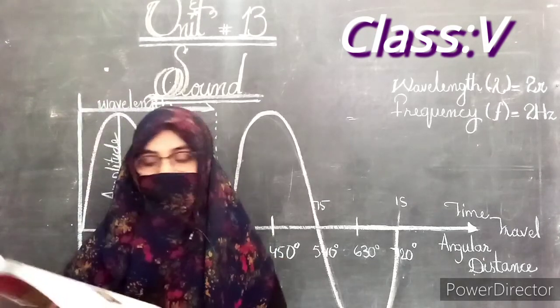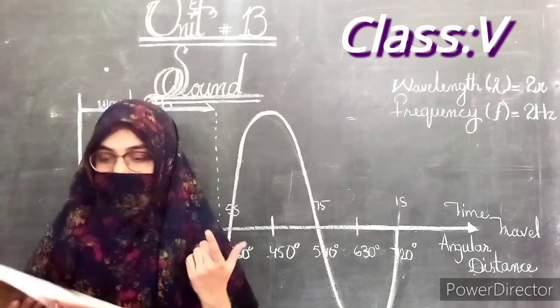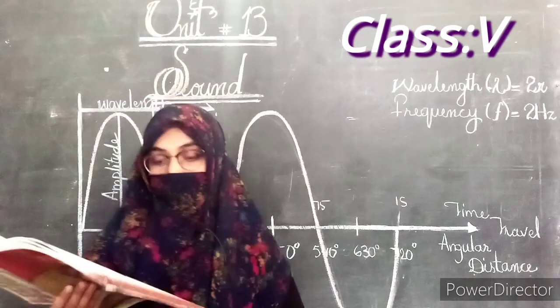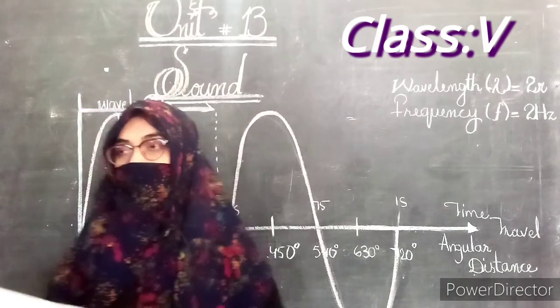You can understand by the fact that the speed of sound in air is 330 meters per second. It is around 5000 meters per second in solids like aluminum and iron.